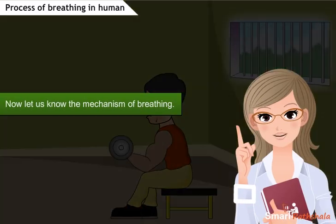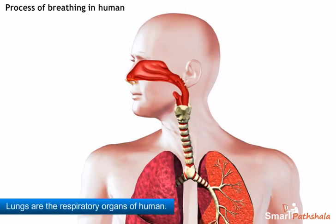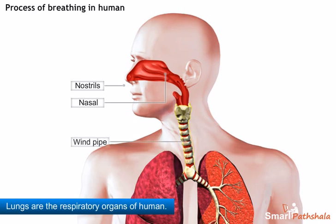Now, let us know the mechanism of breathing. Normally, we take in air through our nostrils. When we inhale air, it passes through our nostrils into the nasal cavity. From the nasal cavity, the air reaches our lungs through the windpipe.